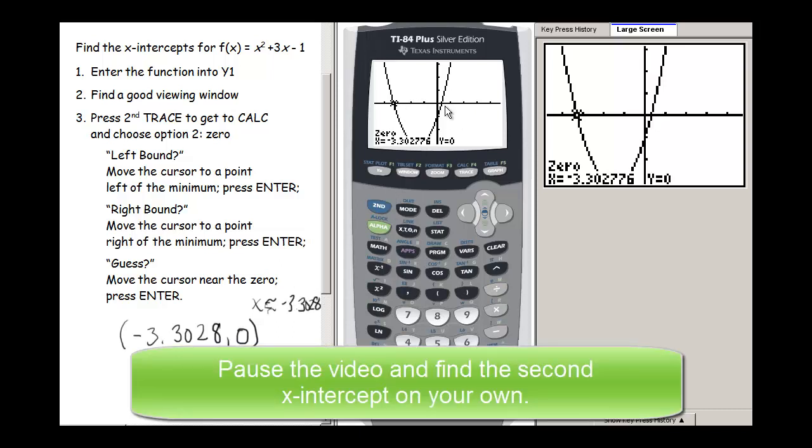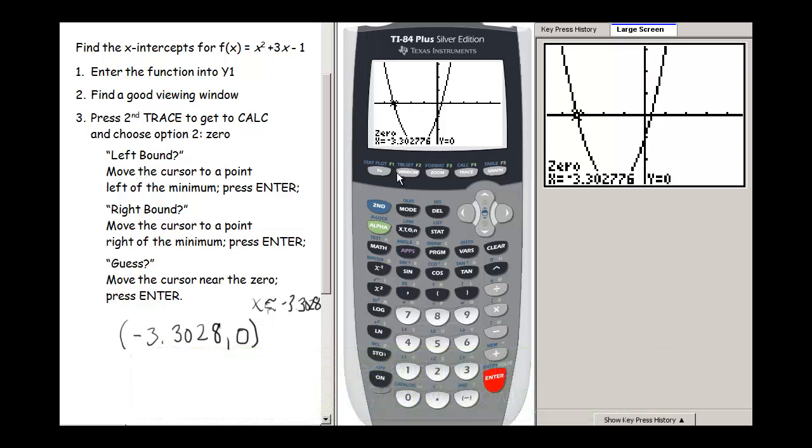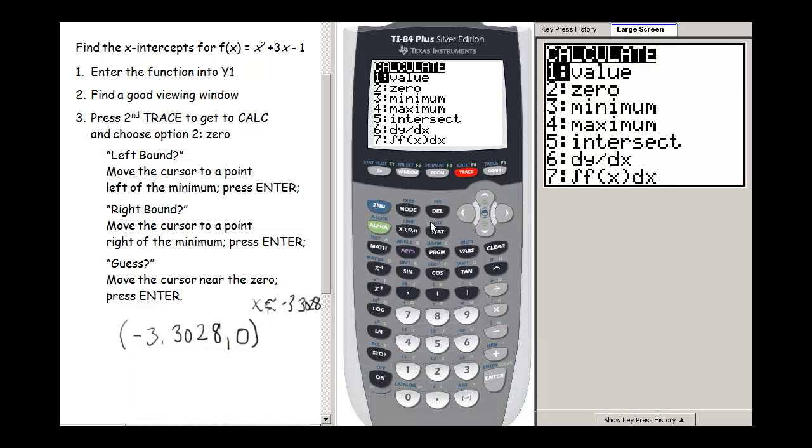Now, on your own, see if you can find this second x-intercept. Let's see how to find this second one. I press 2nd TRACE. I choose the zero option again.